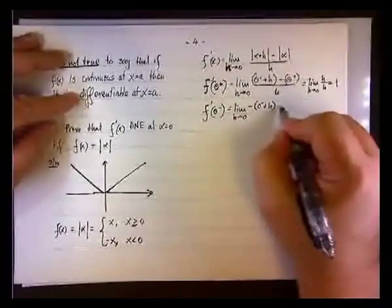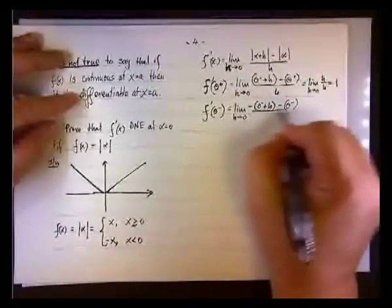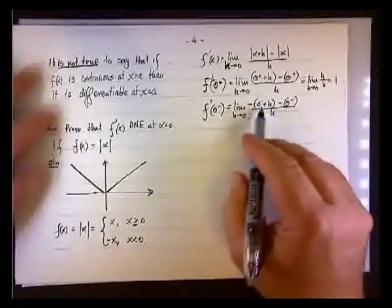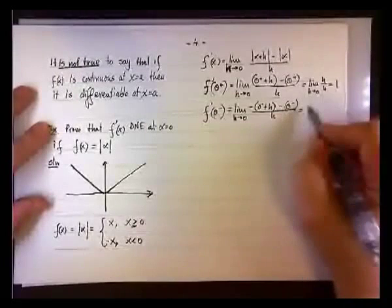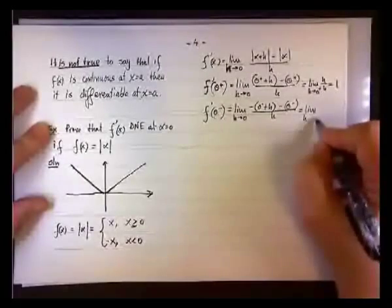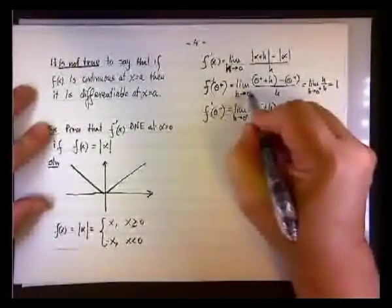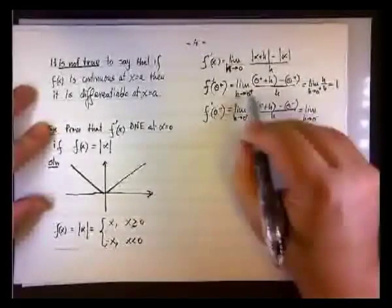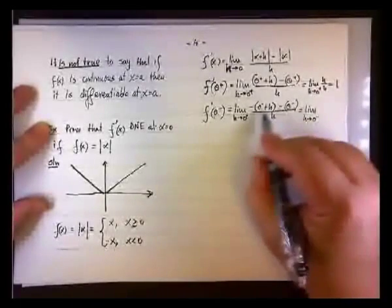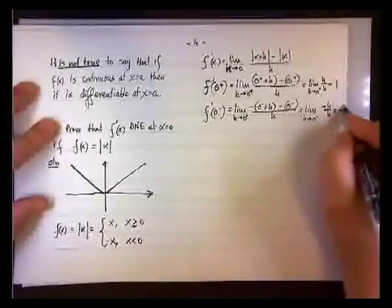Over h. And again, if you clear the parentheses and all of that, you end up having the limit as h approaches 0 minus. Please add that 0 plus here and 0 minus here. You have negative h divided by h, and it's negative 1.